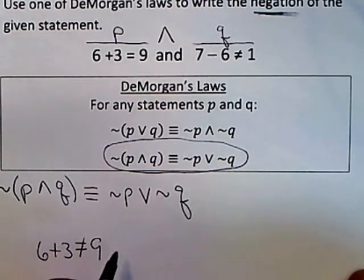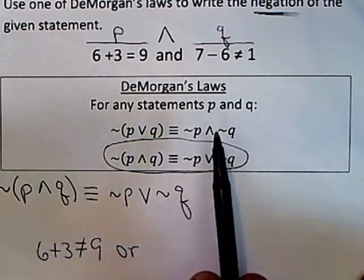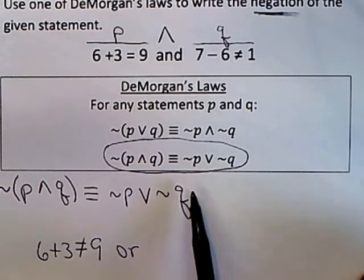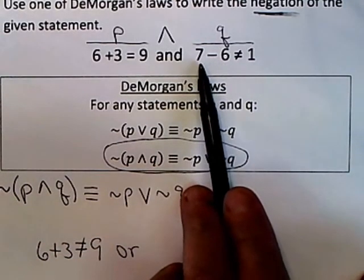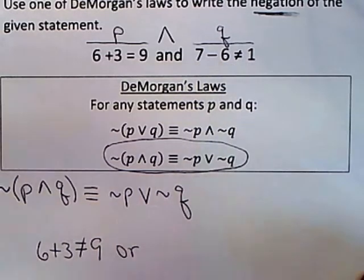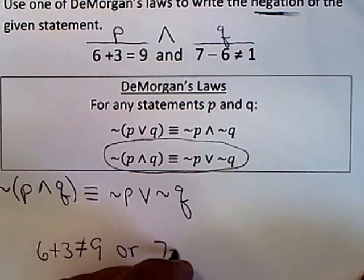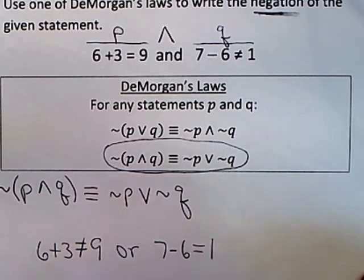OR, and then I take the negation of Q. The negation of Q would be if Q is 7 minus 6 is not equal to 1. The negation of that would be 7 minus 6 is equal to 1.